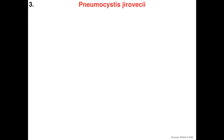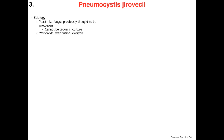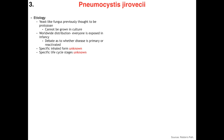Next up is Pneumocystis jirovecii. As far as etiology, he's a yeast-like fungus previously thought to be a protozoan until he was recategorized. He cannot be grown in culture and is found worldwide. Most people are exposed in infancy and there is debate as to whether the disease is primary or due to reactivation. His specific inhaled form and specific life cycle stages are not known. His tropism is for the lung septae — he's primarily a respiratory pathogen.